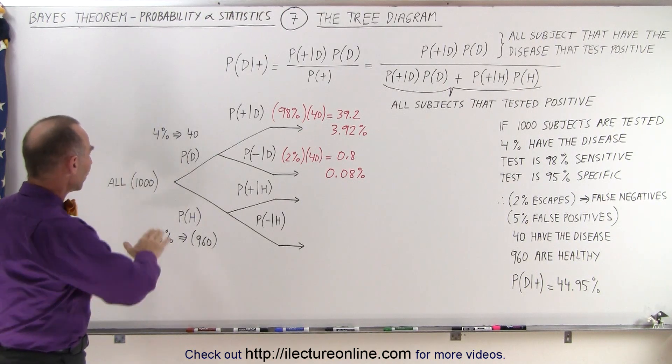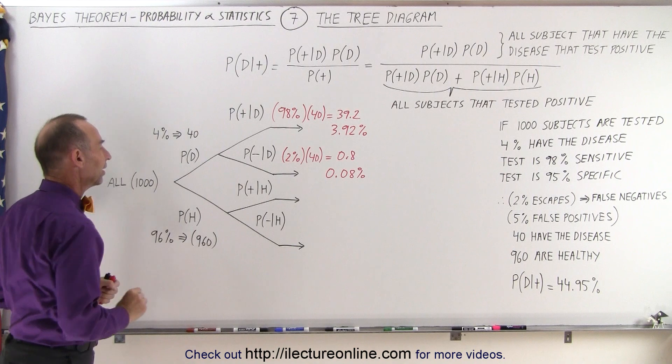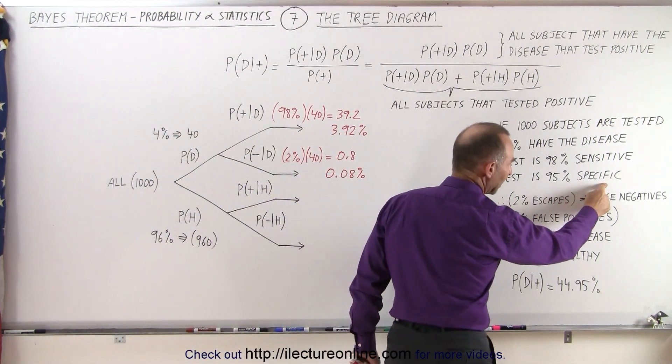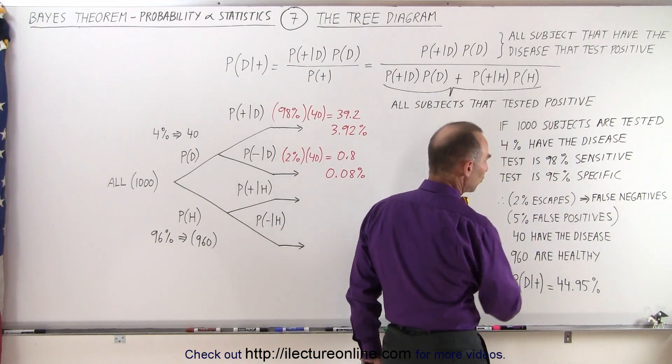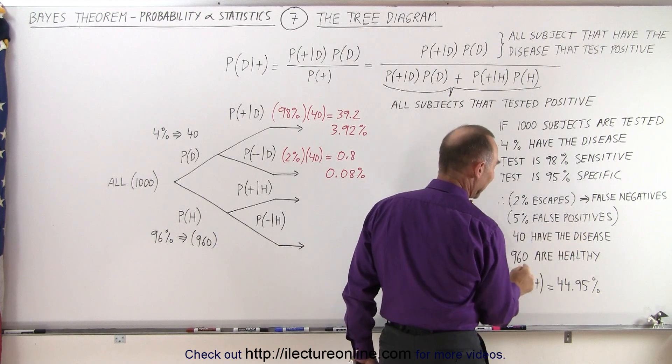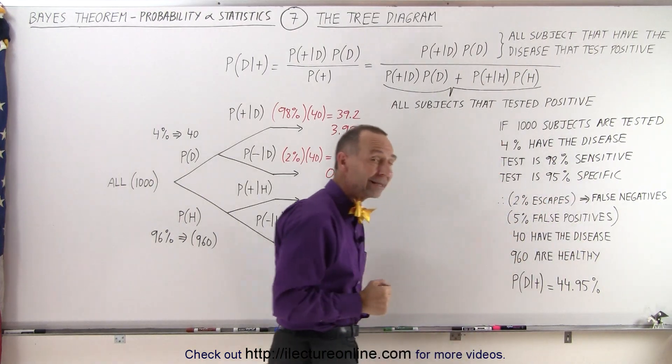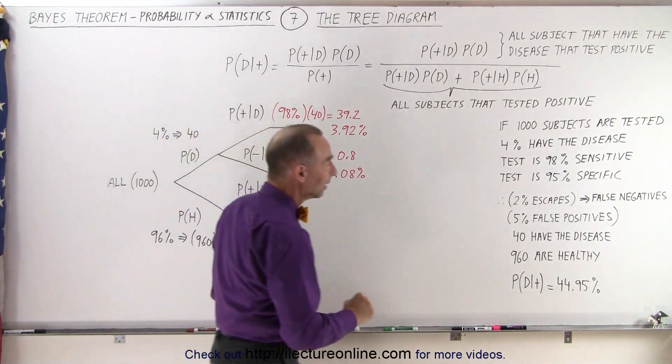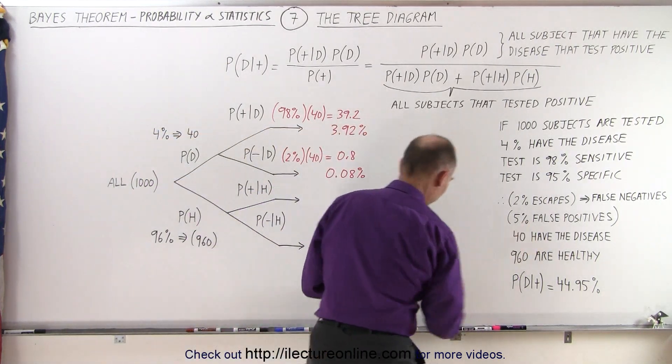All right, now we go to the ones that are healthy. How many of those will test positive? Well, we see that the specificity is 95%, which means that 5% will test falsely positive, and 95% will test correctly negative. So we're looking for the ones that test positive if they're healthy. Therefore, there'll be 5% false positives.